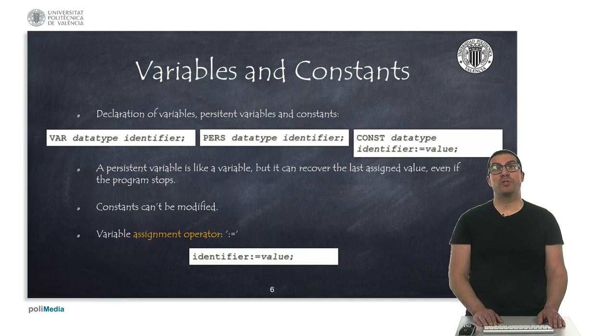RAPID allows you to store data in variables using the VAR keyword, but information can also be persistently stored using the PERS keyword. The difference is that the PERS variables keep their value even when the program is stopped. Constants are declared with the CONST keyword and they need to be assigned at the time of their declaration and cannot be modified later.